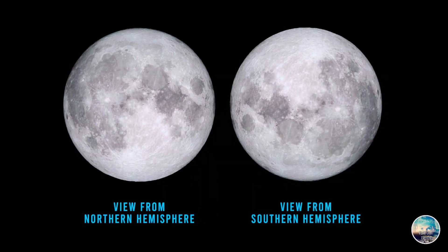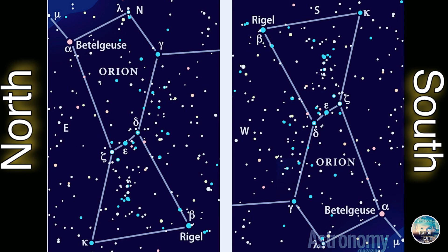Good evening everyone. I've been getting a couple of questions lately about the northern hemisphere sky and the southern hemisphere sky. Two of those questions are: if the earth is flat, then when you look at the moon in the northern hemisphere, why is it upside down when you look at it from the southern hemisphere? And the other question was about the belt of Orion — why is it upside down when viewed from the southern hemisphere?